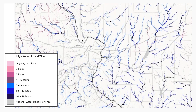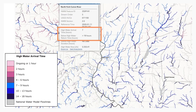For example, the highlighted locations shown indicate areas where the high water threshold conditions or greater are forecast to occur in 7 to 9 hours. These stream reach attributes reveal details of high water conditions arriving in 7 hours, and in this case, the duration of the high water conditions extends beyond the end of the 18-hour forecast.